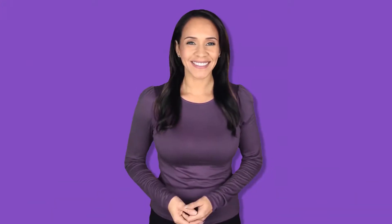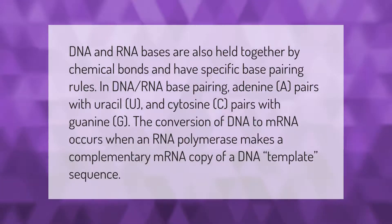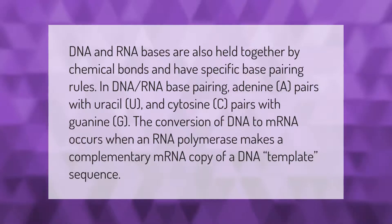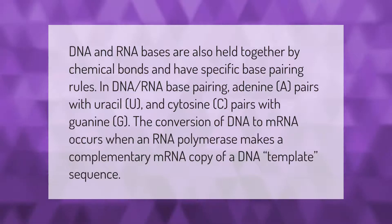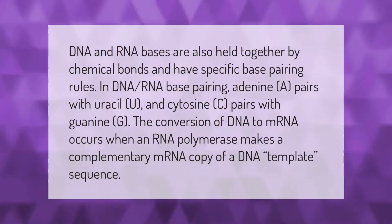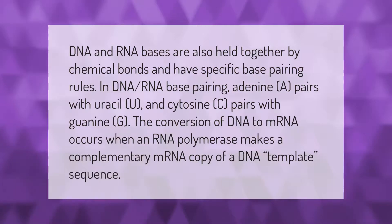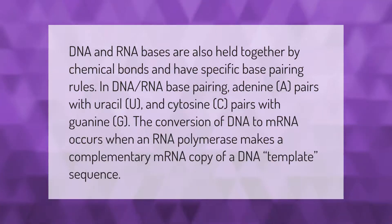DNA and RNA bases are also held together by chemical bonds and have specific base pairing rules. In DNA-RNA base pairing, adenine (A) pairs with uracil (U), and cytosine (C) pairs with guanine (G). The conversion of DNA to mRNA occurs when an RNA polymerase makes a complementary mRNA copy of a DNA template sequence.